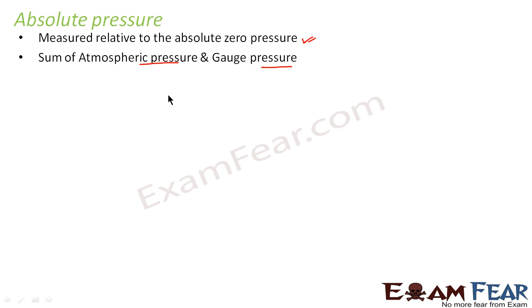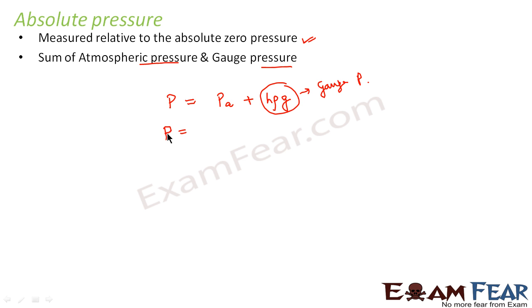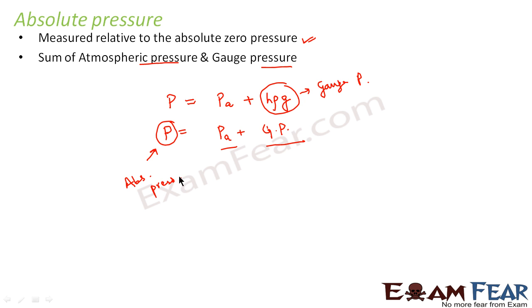As already mentioned, pressure at any point is equal to the atmospheric pressure plus h·ρ·g. We found that h·ρ·g is nothing but the gauge pressure. So the pressure at any point is basically atmospheric pressure plus gauge pressure, and this sum is nothing but absolute pressure. So all three kinds of pressure are present in this one equation.